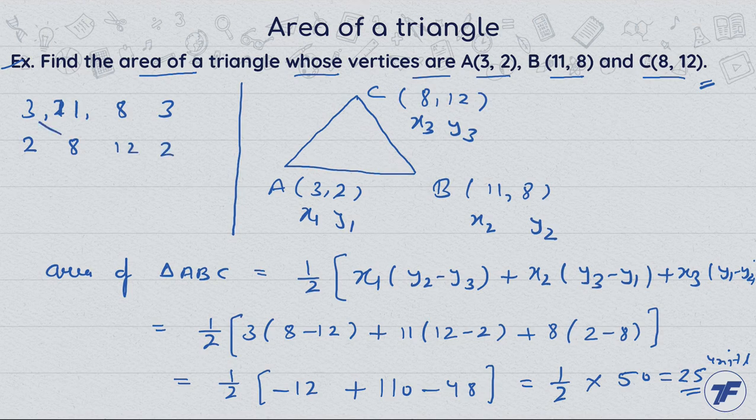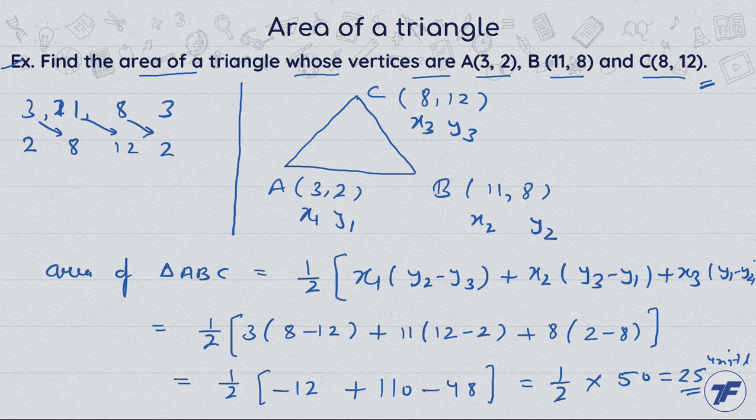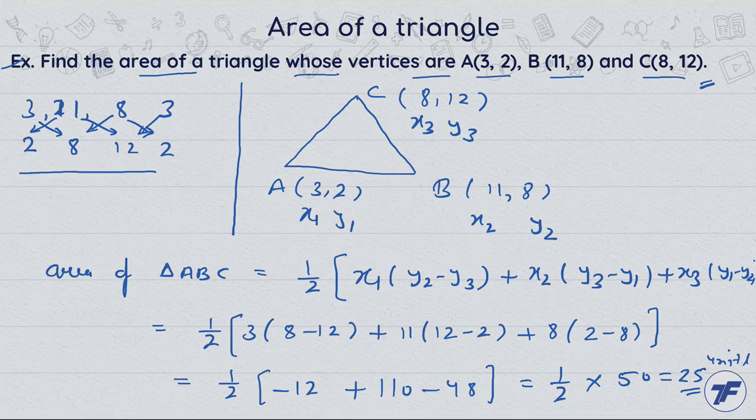First multiply and add with a minus sign, then multiply and add. Subtract these products to finally get the area of 25 square units using the second method.